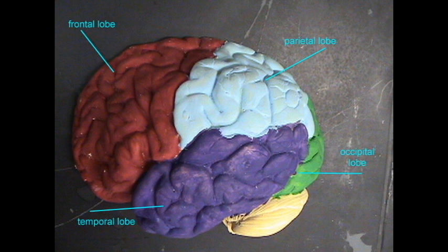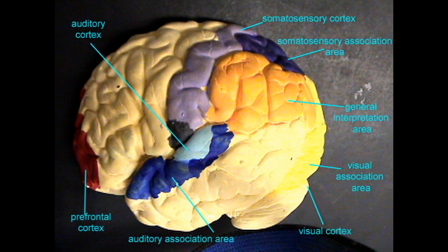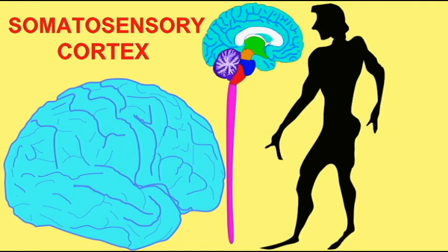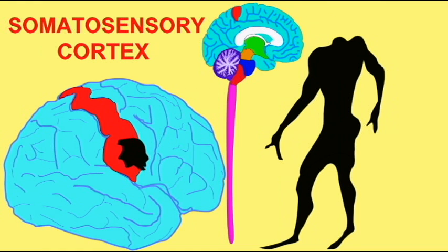Behind the central sulcus is the post central gyrus which is also known as the somatosensory cortex because it contains a representation of the body, a sensory map of the body. So the face is represented in one region, the trunk and hand in another, the legs in another more on the medial side.